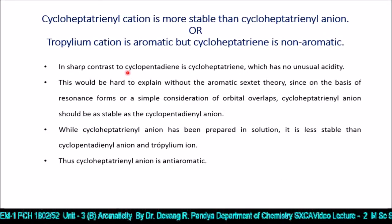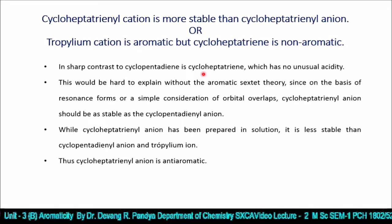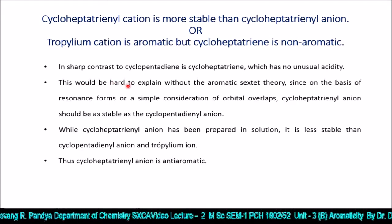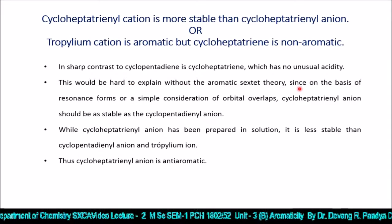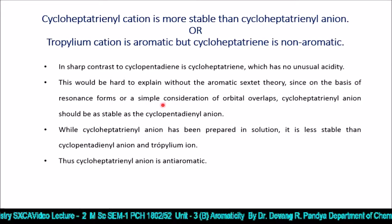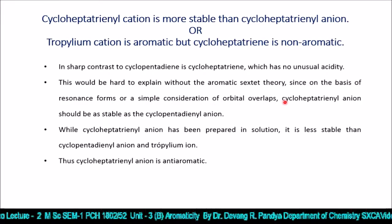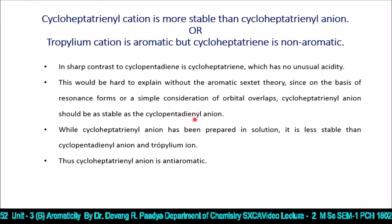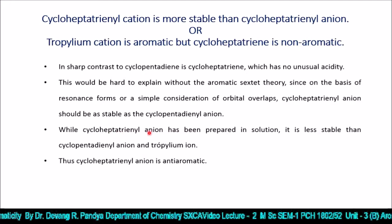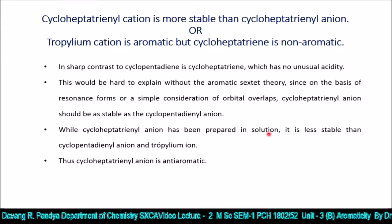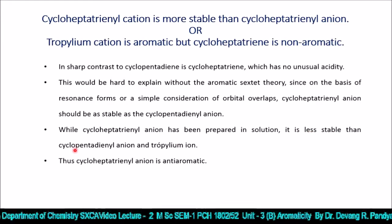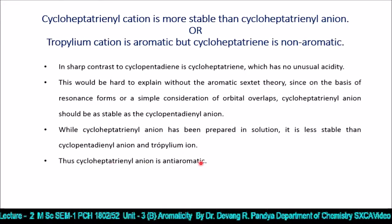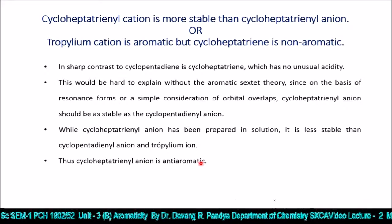In sharp contrast to cyclopentadiene, cycloheptatetraene has no unusual acidity. This is hard to explain without the aromatic sextet theory, since based on resonance forms alone, the cycloheptatrienyl anion might seem as stable as the cyclopentadienyl anion. While the cycloheptatrienyl anion has been prepared in solution, it is less stable than cyclopentadiene.